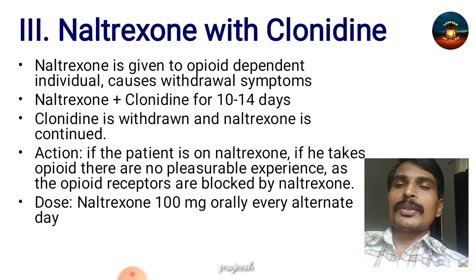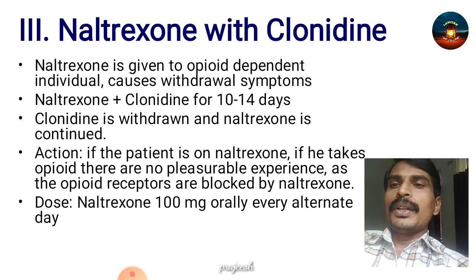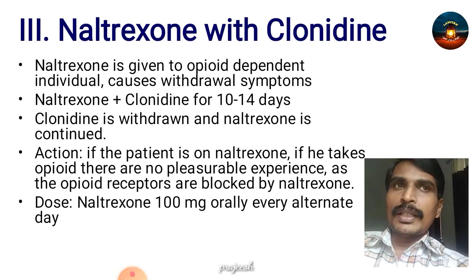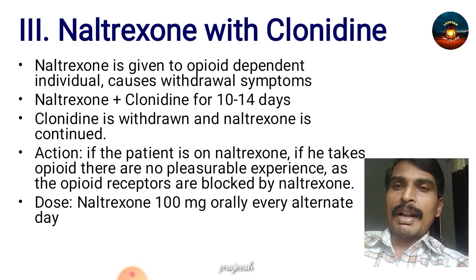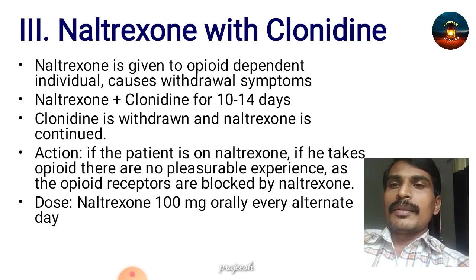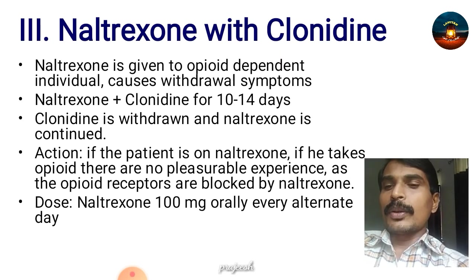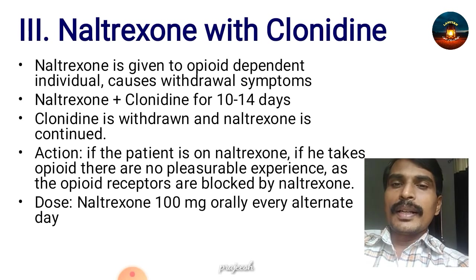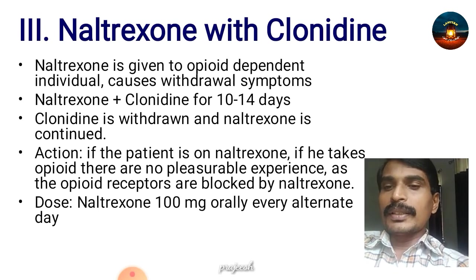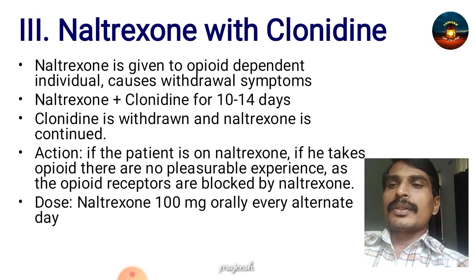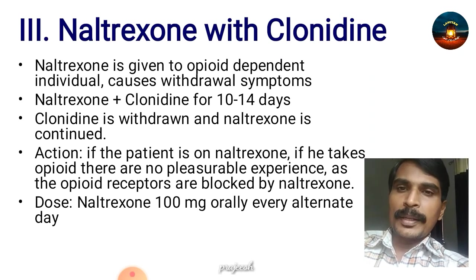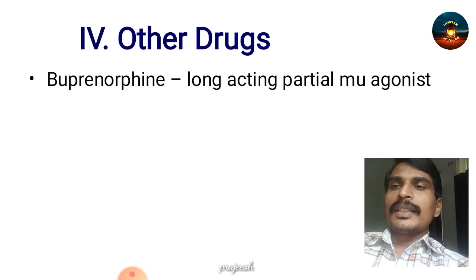Clonidine is then withdrawn and naltrexone is continued. When the patient is on naltrexone, if they take opioids there is no pleasurable experience because the mu receptors are blocked by naltrexone, so the opioids cannot act upon them. The dose is naltrexone 100 mg orally every alternate day. Another drug is buprenorphine, which is a long-acting partial mu agonist.